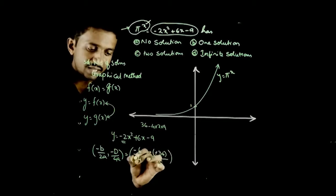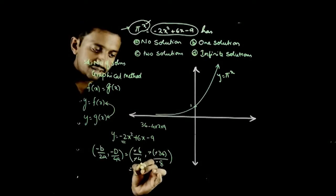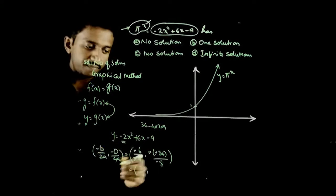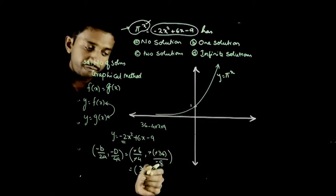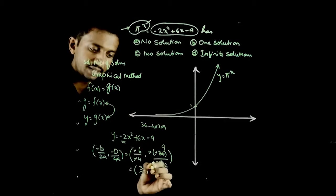-36/4a is -8. Minus minus cancel. So the vertex is 3/2, and if I divide by 4, 4 twos are 9, -9/2.